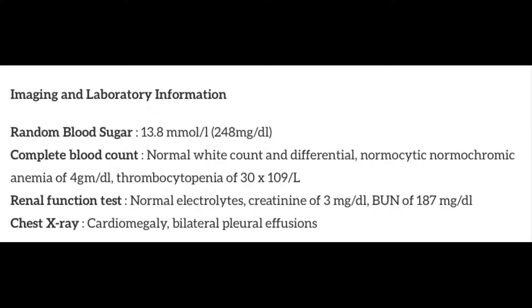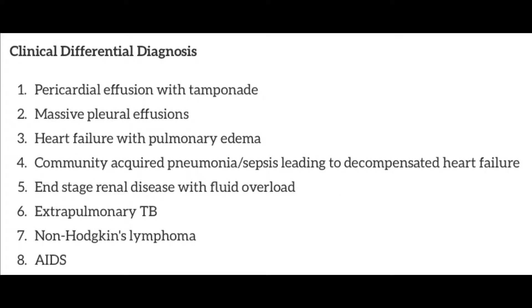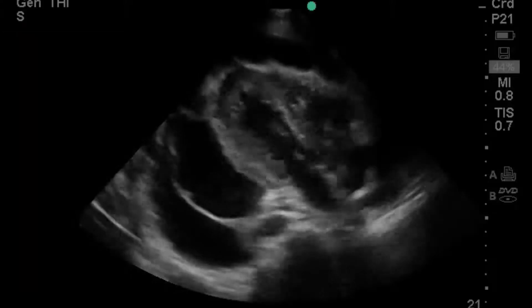Random blood sugar was 13.8 mmol/L, or 248 mg/dL. Complete blood count was notable for normal white count, normocytic normochromic anemia, and thrombocytopenia. Renal function testing showed normal electrolytes, creatinine of 3 mg/dL, and BUN quite high at 187. Chest X-ray showed cardiomegaly and bilateral pleural effusions. This was the differential diagnosis of the practitioner prior to the point-of-care ultrasound. Now let's review the ultrasounds.